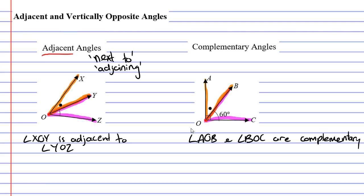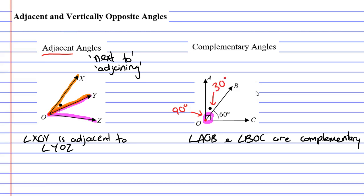We have a right angle in the corner, and a right angle is representative of a 90 degree angle. Which means that angle AOB and angle BOC must add up to 90 degrees. That is what complementary means — complementary means angles that add up to 90 degrees. That angle must be 30 degrees, since the two angles add up to 90 degrees, so angle AOB must equal 30 degrees.